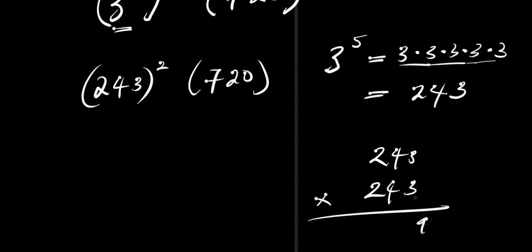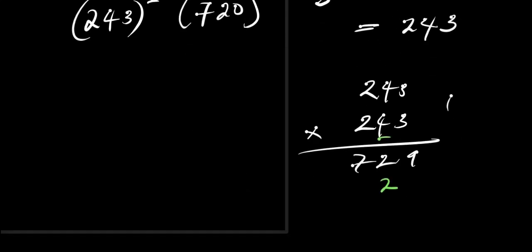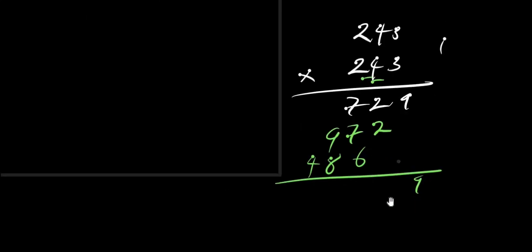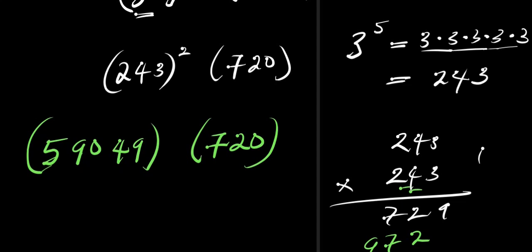We multiply 243 by 243. Working through the multiplication: 3 times 3 is 9, 3 times 4 is 12 carry 1 gives 7 in that column, and continuing through each digit carefully. Then 4 times 3 is 12, 4 times 4 is 16 plus 1 is 17, 4 times 2 is 8 plus 1 is 9. Then 2 times the digits similarly. Adding all partial products together gives 59,049. So we are now computing 59,049 times 720.